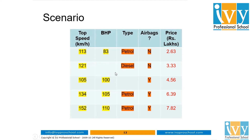BHP contains one missing value and type contains one missing value — we have to treat these. Either we can delete that one record, as one out of five is a minor number, or alternatively we can replace the missing value with imputed values — this process is called imputation. Since BHP is a continuous column, we replace the missing value with the median of all non-null values. In our case, the BHP column's median is 102.5.